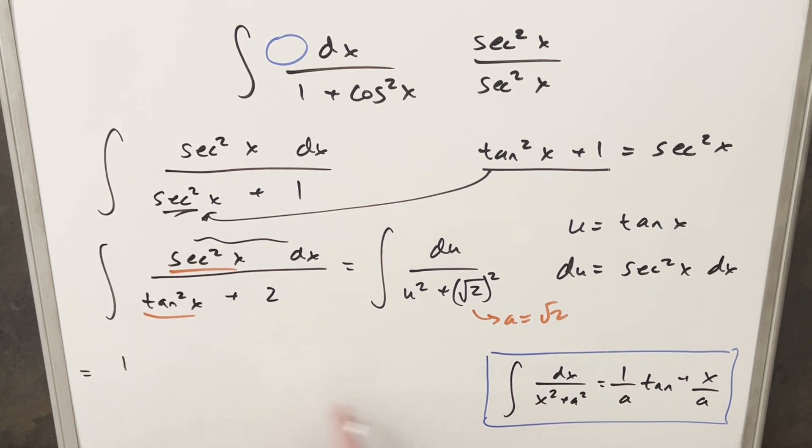Doing that, we're going to have 1 over our a value, so 1 over square root of 2, arctan of u over square root of 2. But now we just need to back-substitute to finish this off. For my final solution, we have 1 over square root of 2, arctan of tan x over square root of 2, plus c. And that's it.